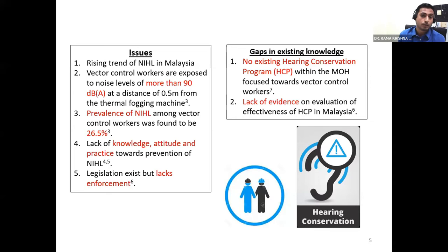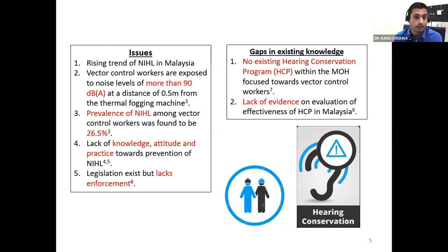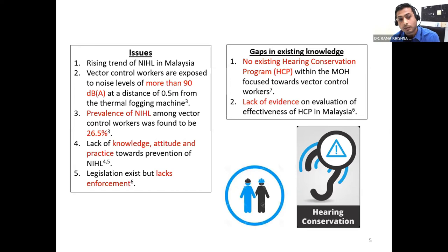Previous studies conducted in Malaysia — including a study in UiTM looking at vector control workers — found that vector control workers who are foggers, involved in dengue prevention and control activities, are actually exposed to noise levels well above 90 decibels at a distance of 0.5 meters from the thermal fogging machine. The prevalence of NIHL was found to be around 26.5% among that population. Studies also show a lack of knowledge, attitude, and practice towards prevention of noise-induced hearing loss among this population. Legislations exist to manage and control noise-related hearing disorders in Malaysia, but it is quite hard for the enforcing body to carry out enforcement due to the large coverage area.